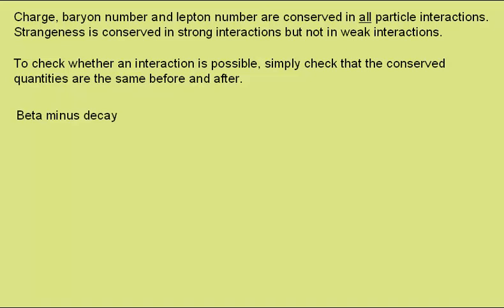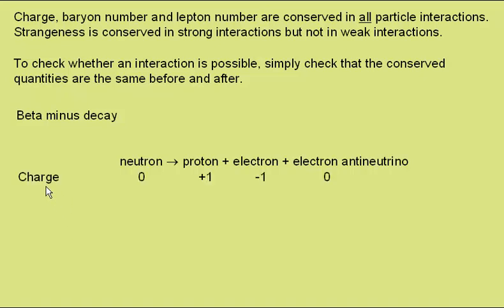As an example, let's look at beta minus decay. This is where a neutron becomes a proton, ejecting an electron and an electron antineutrino. First we'll look at conservation of charge. The neutron has zero charge, the proton a charge of plus one, the electron a charge of minus one, and the electron antineutrino is neutral. So overall we have zero charge on the left and a net of zero charge on the right, so in terms of charge conservation this interaction is possible.